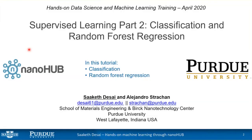Thank you all for being here for the fourth session in the Health on Data Science and Machine Learning training series. This is the second session where we will talk about machine learning. The last session looked at linear regression and neural network regressions. In this session, we will look at classification and using random forests for regression tasks.